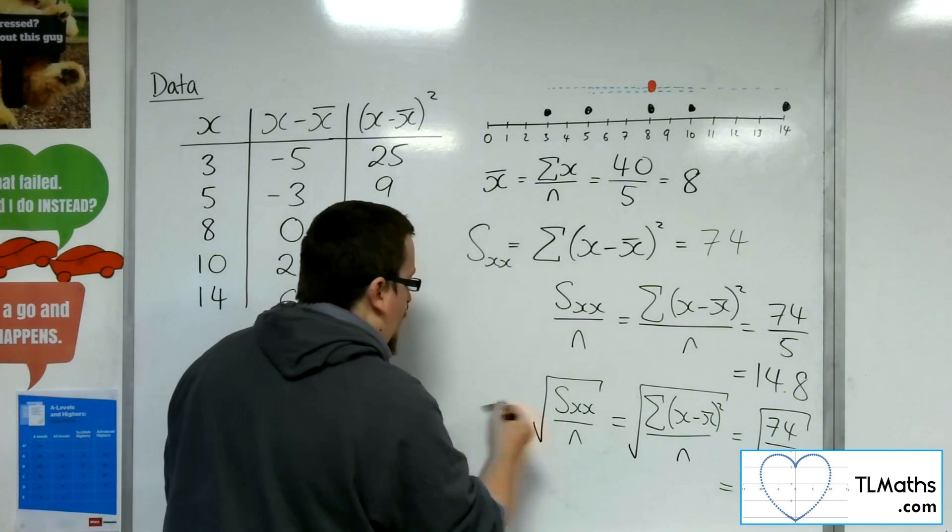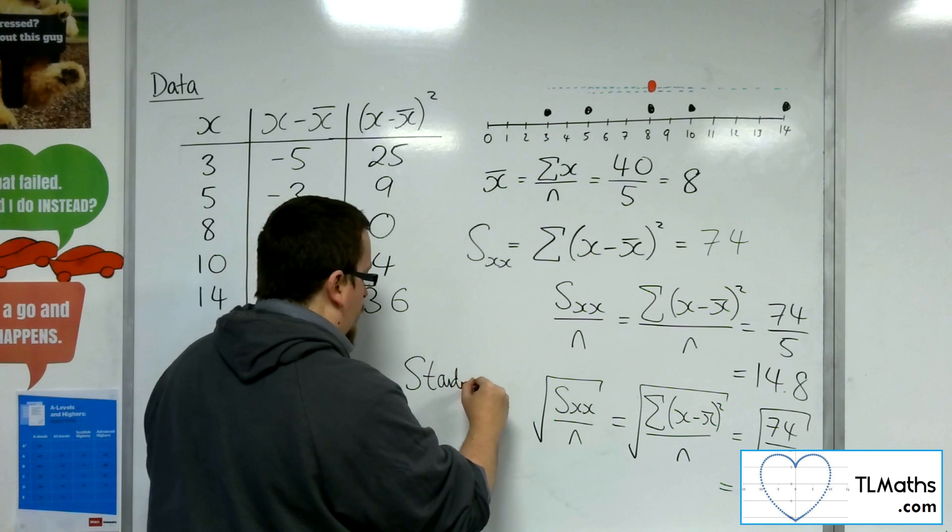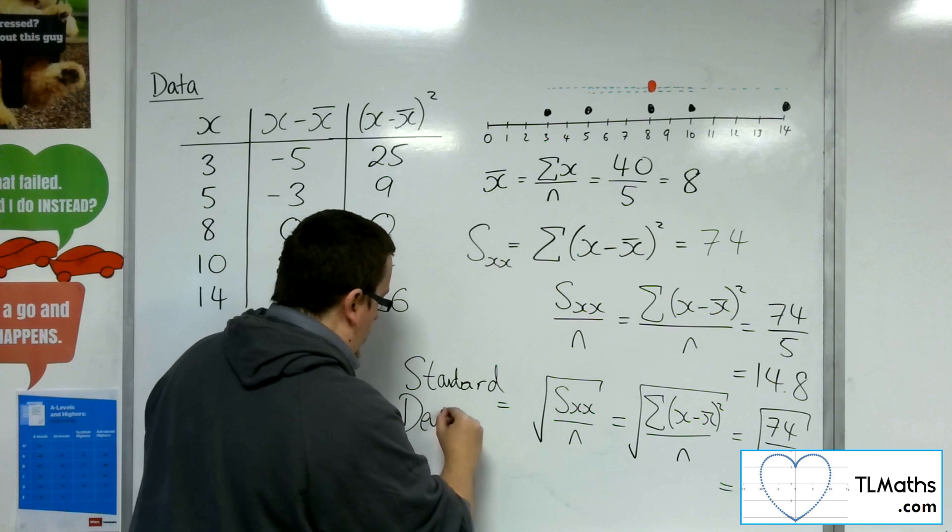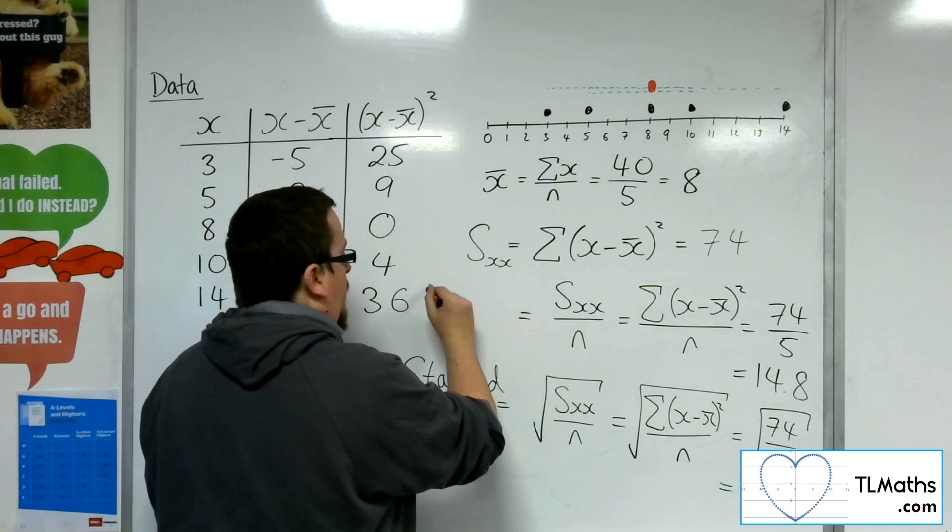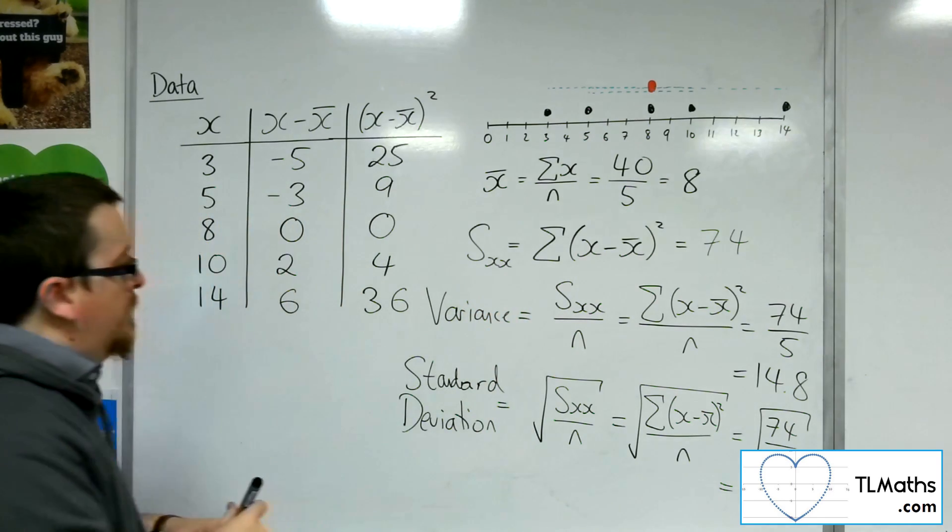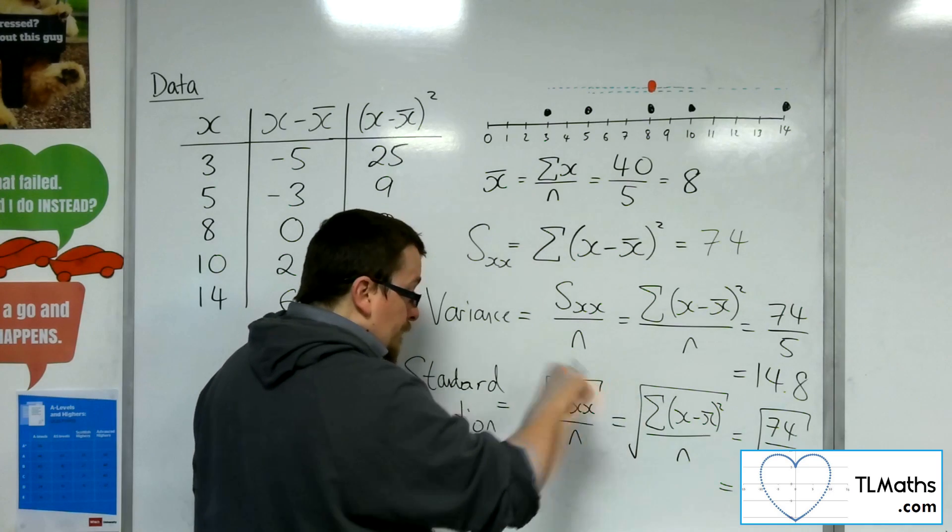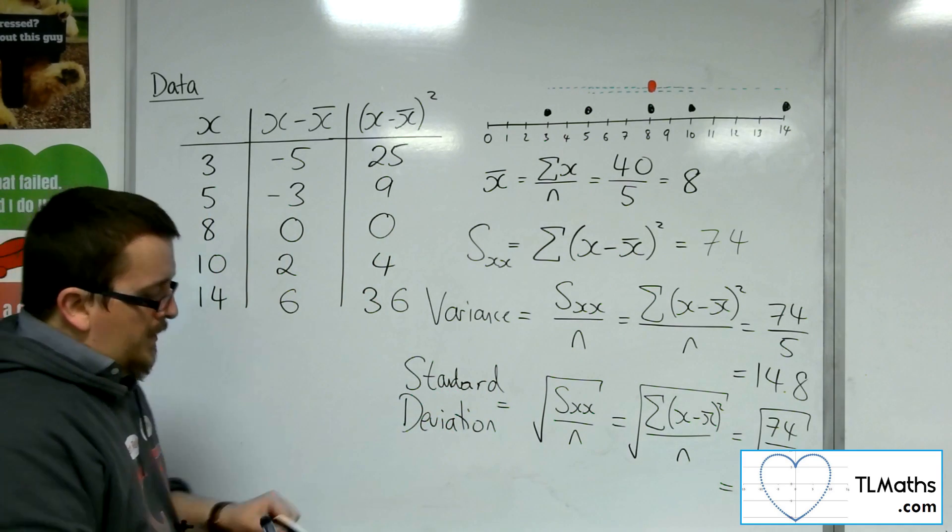So 3.85 is the average distance each of those data points are away from the mean. Now, this is what we refer to as the standard deviation. Whereas this calculation here is known as the variance. So the standard deviation uses this formula here.